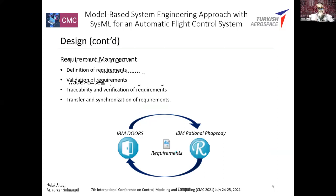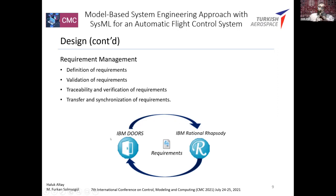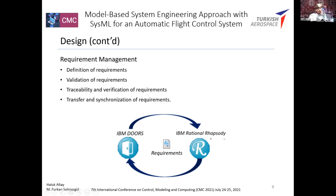Requirements management covers the following four processes: definition of requirements, validation of requirements, traceability and verification of requirements, and transfer and synchronization of requirements. Managing the requirements with a single software ensures each stage is carried out more efficiently. In this case study, IBM DOORS software was selected for the requirements management process. IBM Rational Rhapsody is the system architecture tool; SysML models and system architecture were created using IBM Rational Rhapsody.